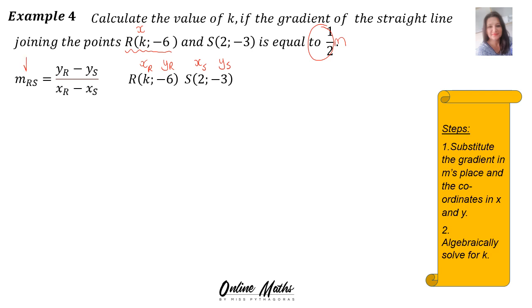So into the gradient, the given gradient was a half. And then y of r, negative 6 minus bracket the y of s, negative 3, over the x of r is k, that's the variable you want, minus x of s, 2.